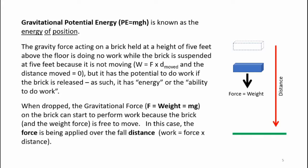When dropped, the gravitational force — which is F equal to MG, equal to weight — on the brick can start to perform work because the brick and the weight force are free to move. In this case, the force is being applied over the fall distance, and we know that work is equal to force times distance.